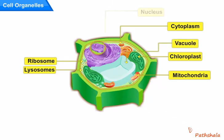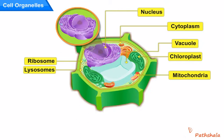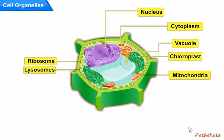Now let us discuss about the nucleus of the cell. Nucleus is called as the cell brain and it contains the nucleolus, chromosomes, and DNA.